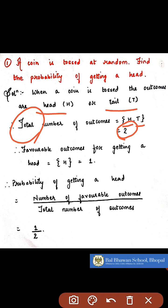Now you have to find the probability that we get a head. The event you want is to get a head, and there is only 1 head in a coin. So the favourable outcomes for getting a head will be 1. Therefore, the probability of getting a head is number of favourable outcomes upon total number of outcomes, that is 1 upon 2. On the other hand, the probability of getting a tail will also be 1 by 2.